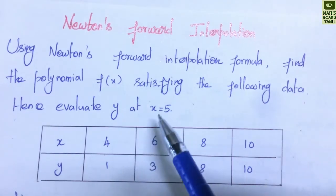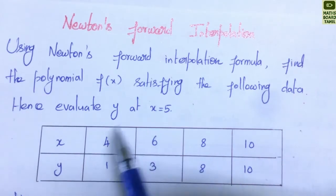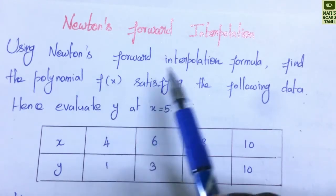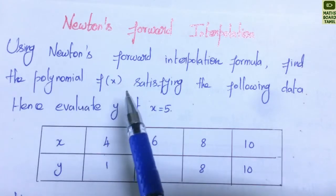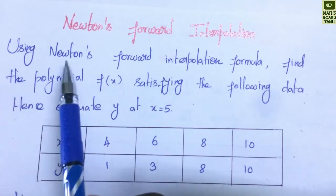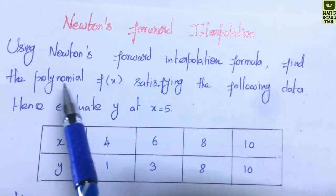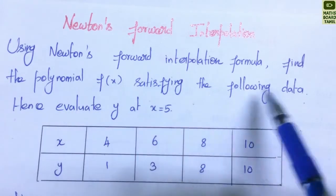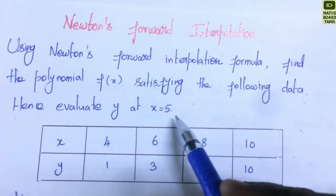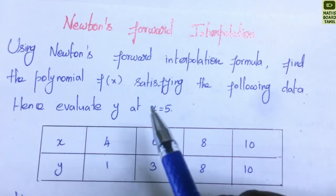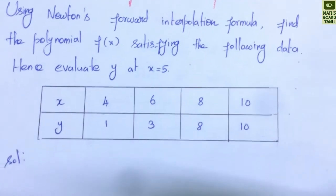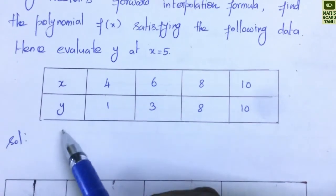Using Newton's forward interpolation formula, find the polynomial f(x) satisfying the following data. Hence, evaluate y at x=5, that is, find the value of f(5). We need to find the polynomial f(x) given the data for x and y.